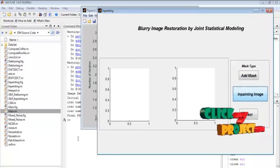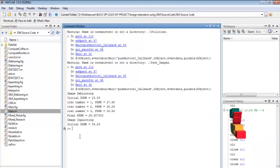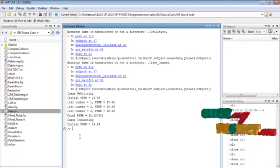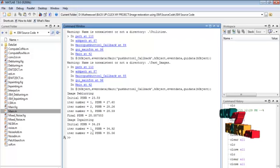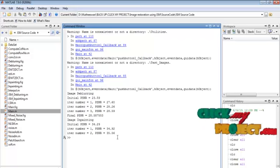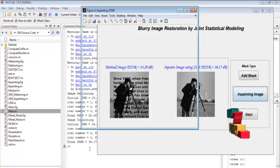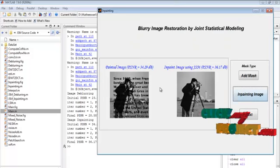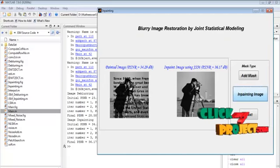And by pressing the inpainting image button we can perform the inpainting process. Here also I use the iteration level as three. So this process will be repeated for three times. Here also I display the PSNR for every iteration. And we got the final. Here I displayed the painted image. And here I displayed the inpainting image with the PSNR.